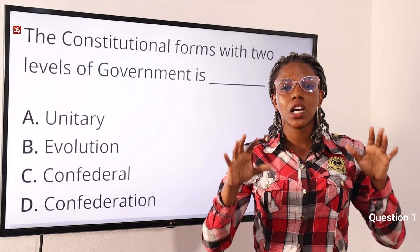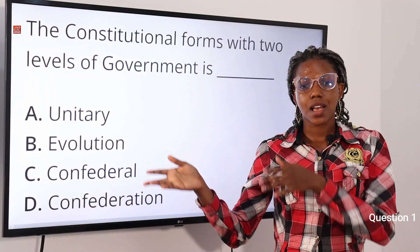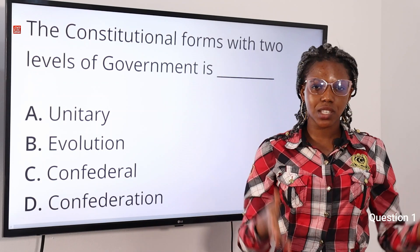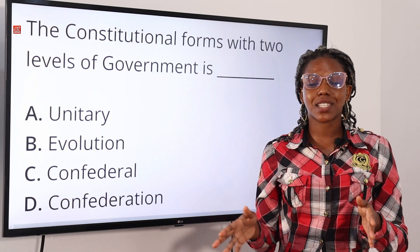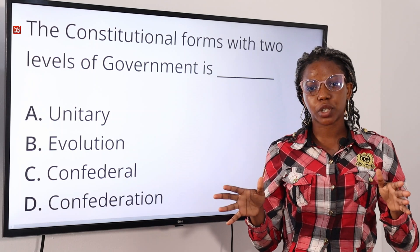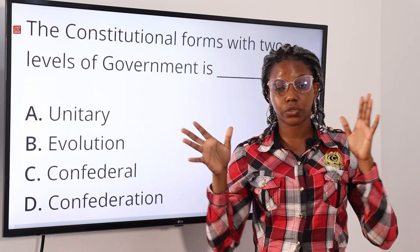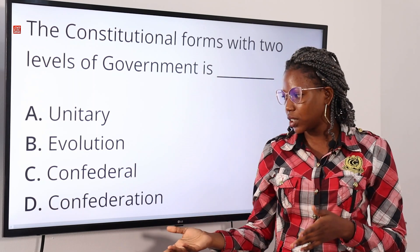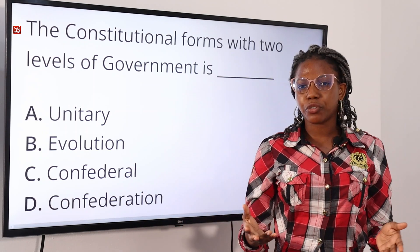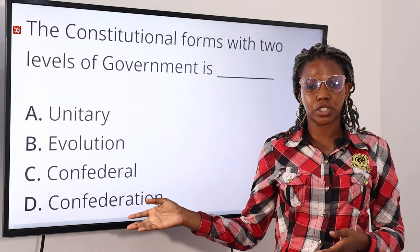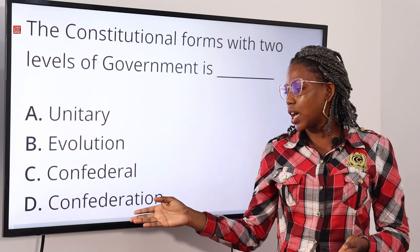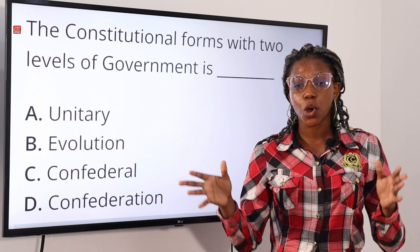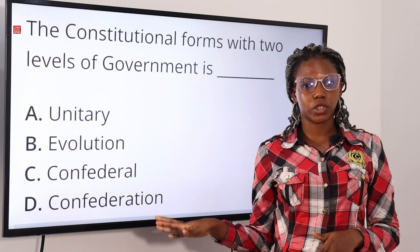In confederation, the local levels or confederal states have much more power or authority than the central government, so it has a low centralization system, as opposed to the unitary system of government which involves a single central government where power is highly centralized. Devolution is just a gradual development; confederal is simply related to confederation. Option C is a distractor, so option D is the correct answer.